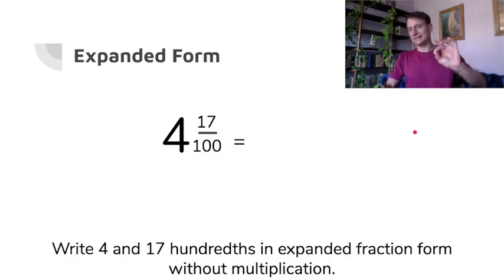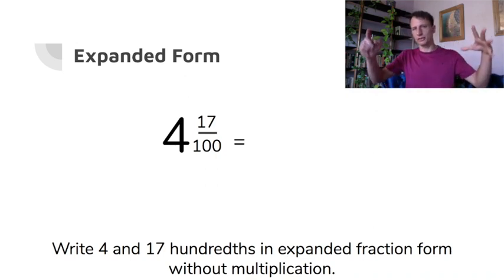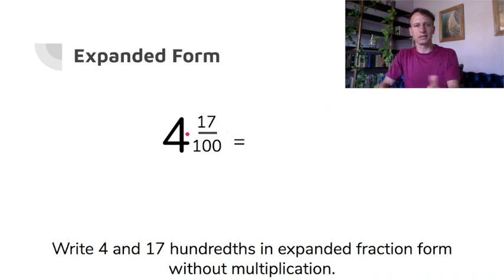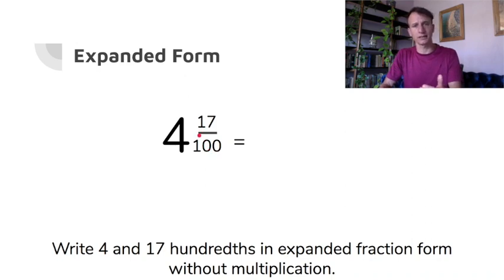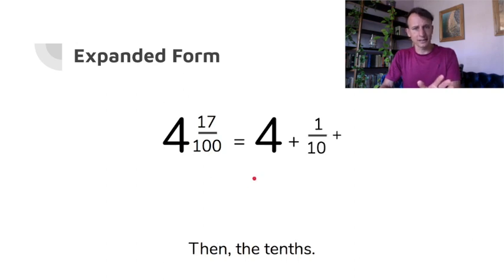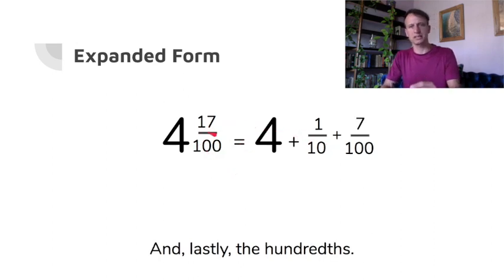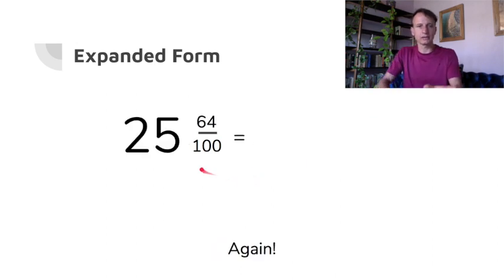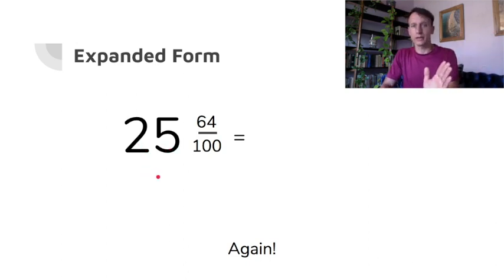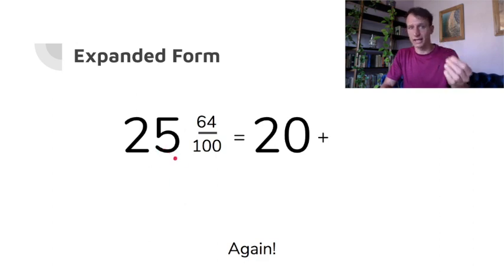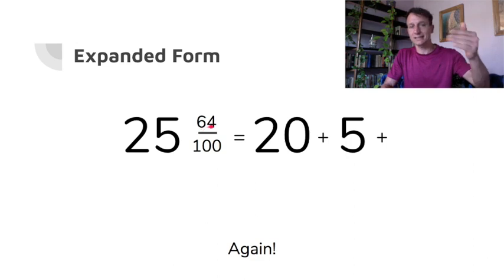Here's a quick review of yesterday's lesson. We're going to do this in simple expanded form — not the whole 'this times that plus this times that.' So four is just four — its value is four. The next digit: its value is ten hundredths, which we could also call one tenth. Then seven hundredths. Going digit by digit, saying what place it's in and what its value is. Now this one: a tendency is to say '25,' but we go digit by digit. The two's value is 20, the five's value is five.